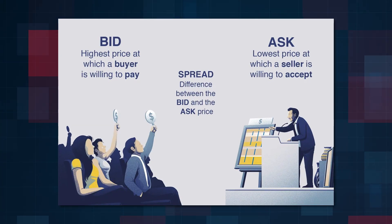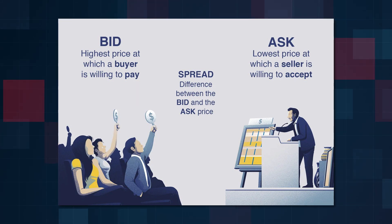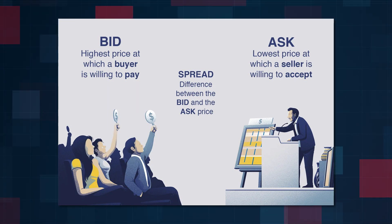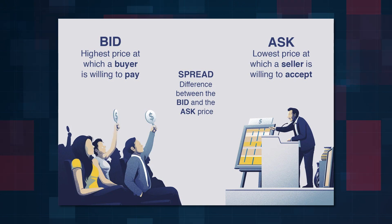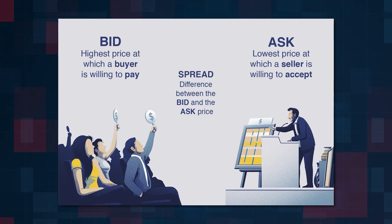Market makers buy and sell assets from their own accounts with the aim of making a profit, often through the spread — the difference between the highest bid and the lowest ask. Their trading activity creates liquidity, reducing the impact of large trades on the price.